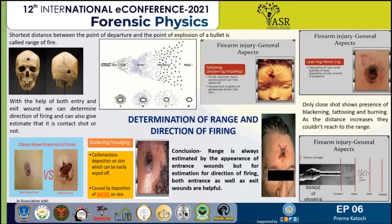Tattooing is also known as peppering, and it is a deposit of semi-burnt or unburnt powder particles under the skin — and it cannot be removed easily. So with the help of these three terms, we can tell whether the range is contact shot, close shot, near shot, or distant shot.